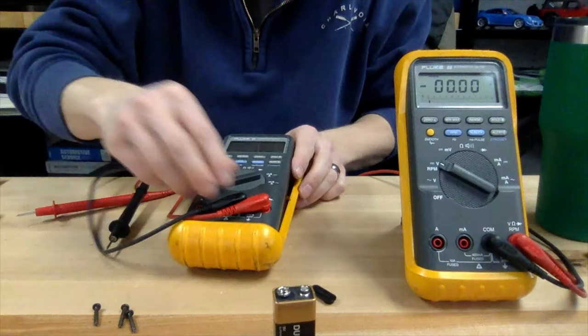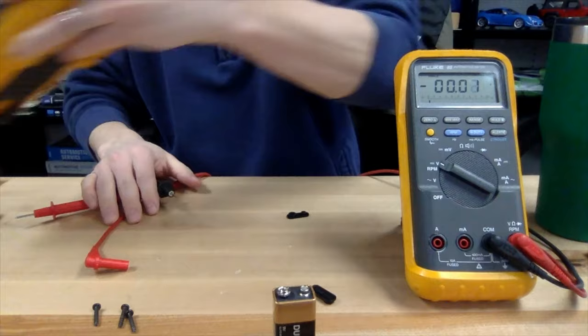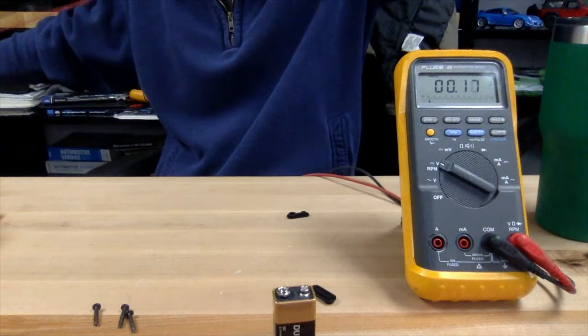We've got two test leads. The black test lead lives in the hole that says COM, which is short for common. The red test lead is going to be in the voltage jack because we're measuring voltage, and that's also shared with the ohms and the diode setting as well.